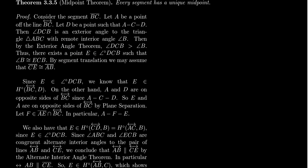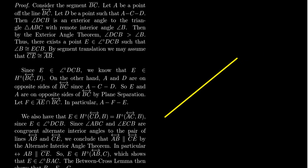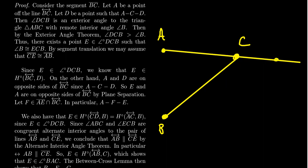This is a very fun but surprisingly lengthy argument — it's difficult to actually construct midpoints. We start with a segment BC and must prove it has a midpoint. We pick some point A not on line BC, whose existence follows from incidence axioms. Taking the line determined by A and C, we extend it so there's a point D such that C is between A and D. We then consider triangle ABC, for which angle DCB is an exterior angle.